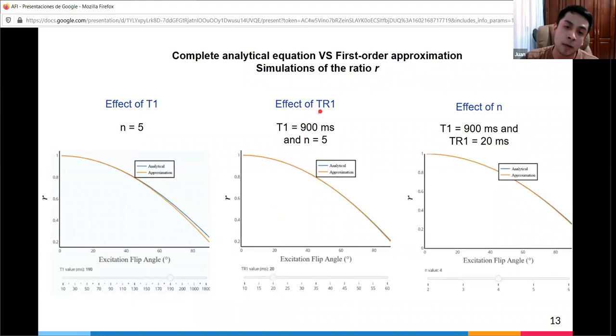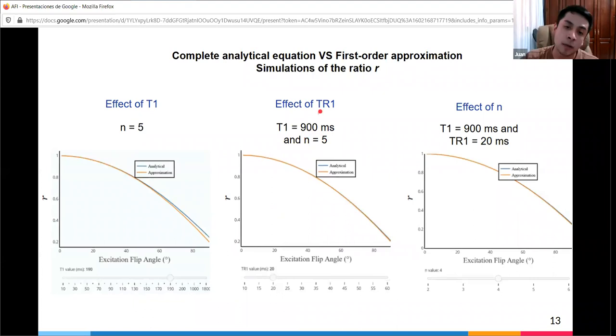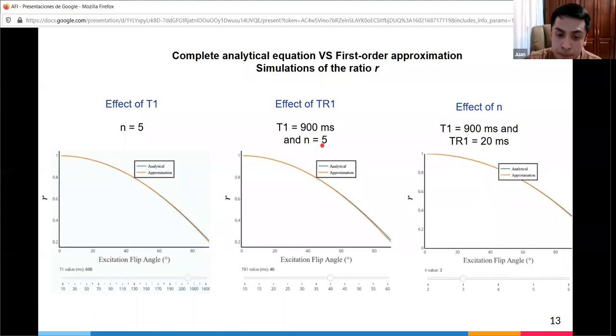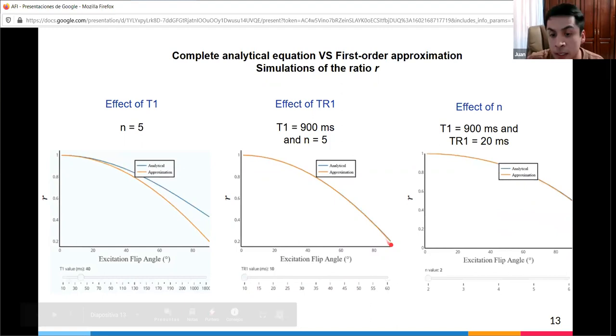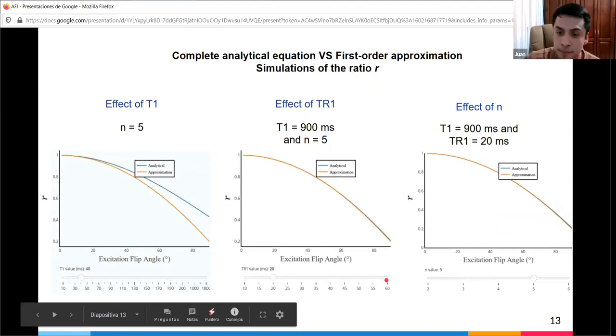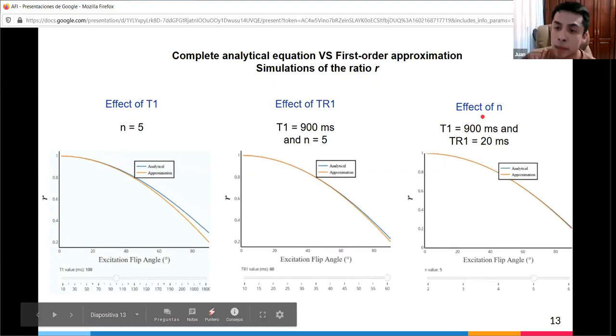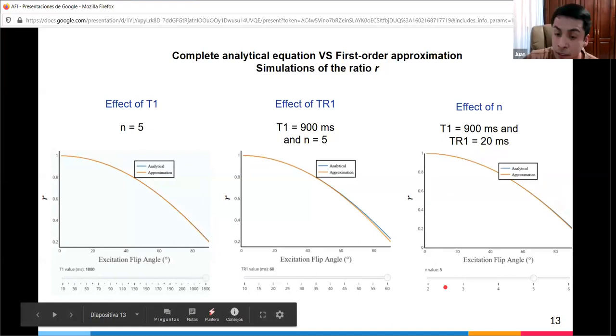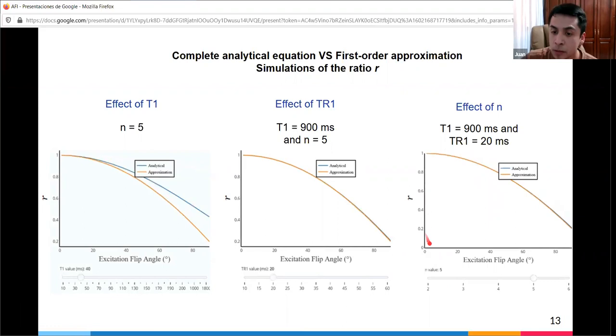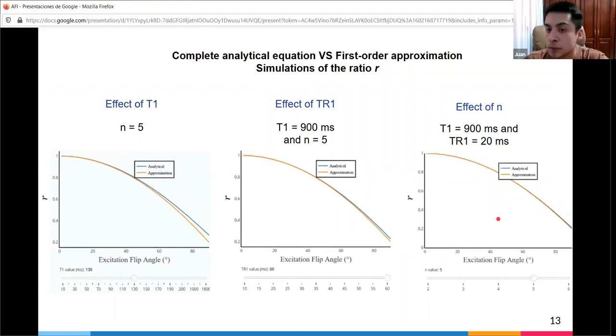To study the effects of timing parameters, they fixed T1 to 900 milliseconds and ratio n to 5. The user can change repetition time 1. There's also slight deviation from analytical and approximation at high excitation flip angles and long repetition times. The effect of ratio n shows that n is the main parameter affecting AFI method sensitivity. If they increase n, the variability of r increases for a wide range of excitation flip angles. However, they cannot increase ratio n without limit due to scan time constraints.